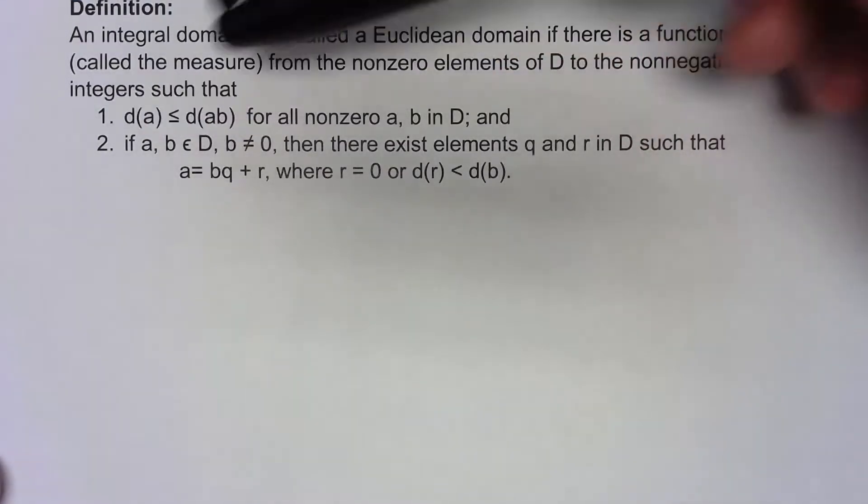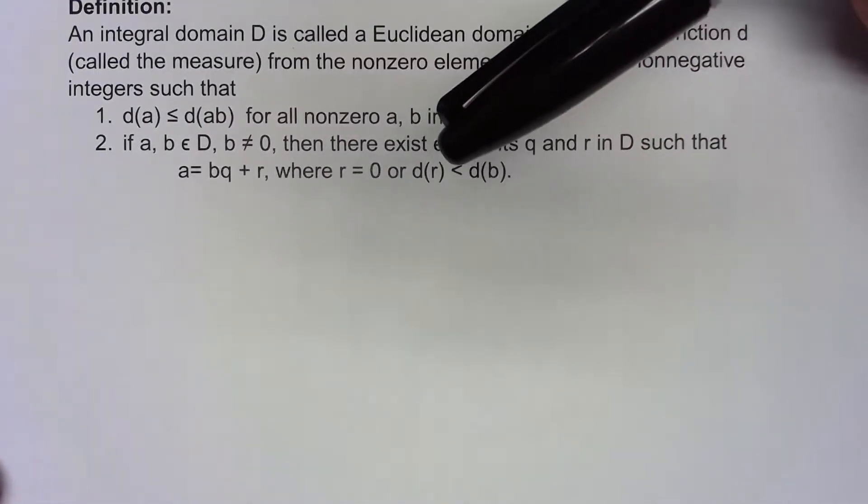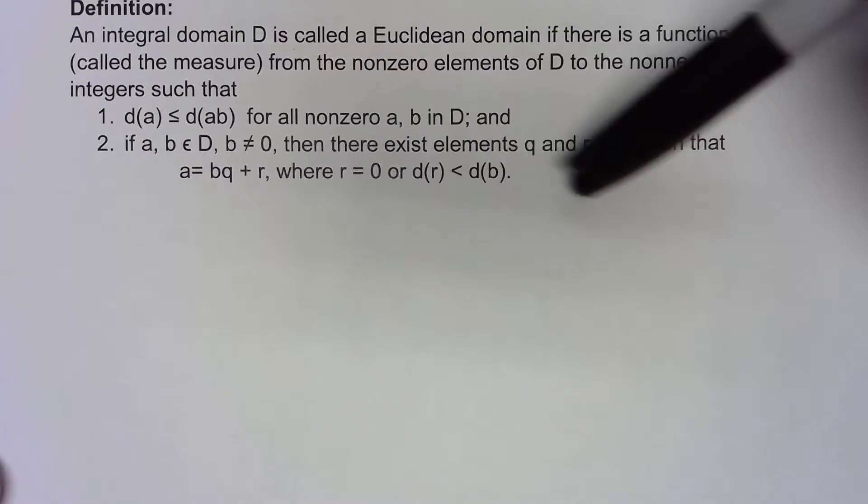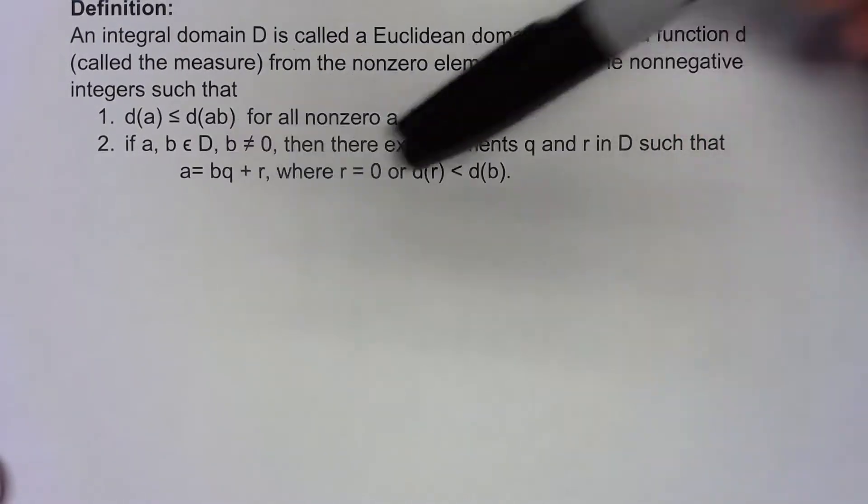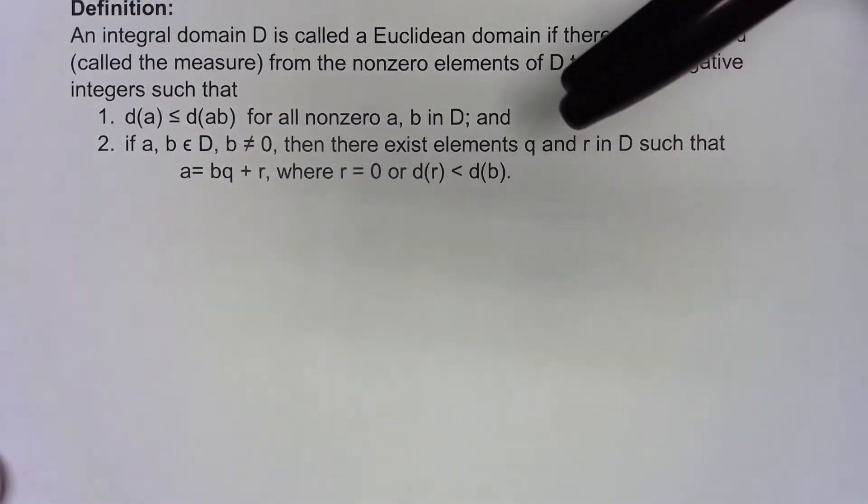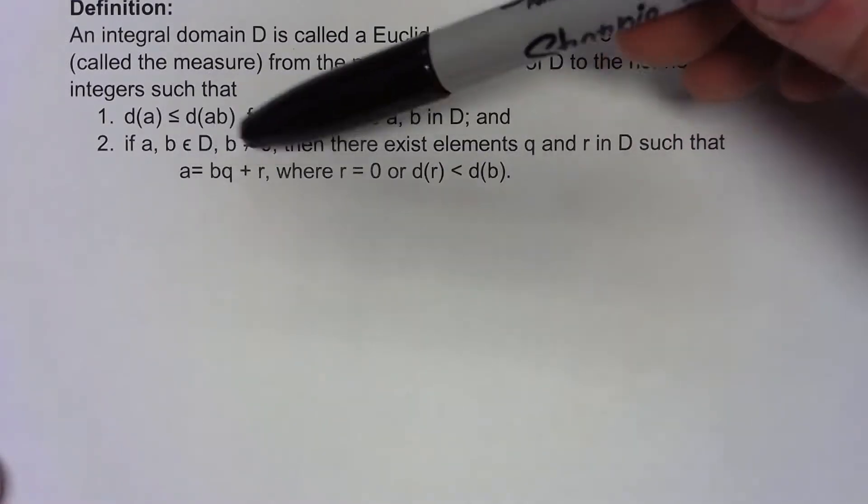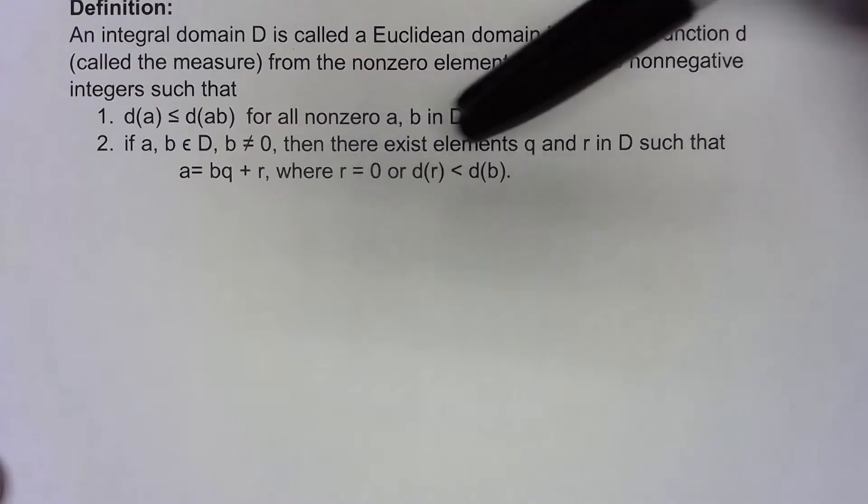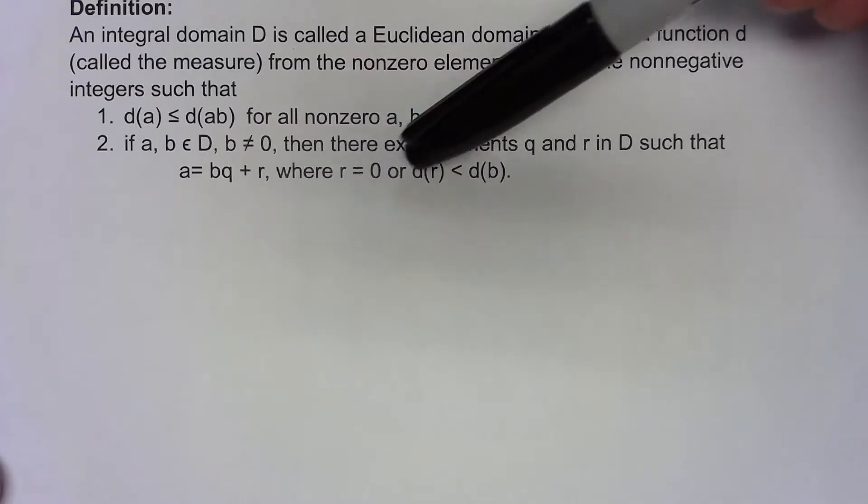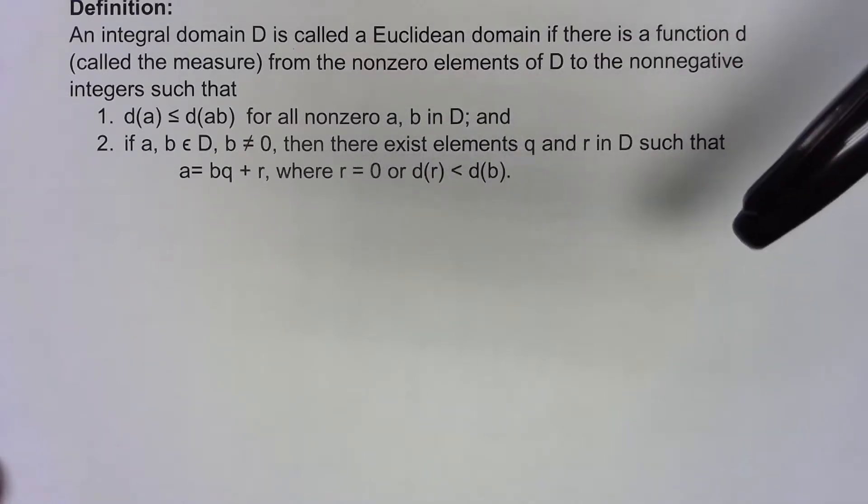And if we have two elements in the domain with the second one not being zero, then we can do sort of a division algorithm thing. So there exists elements q and r such that a equals bq plus r, where either r is zero or the measure of r is less than the measure of b.